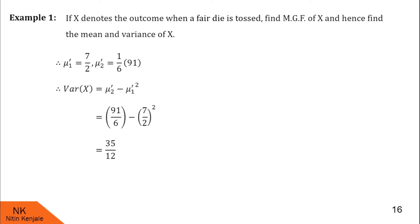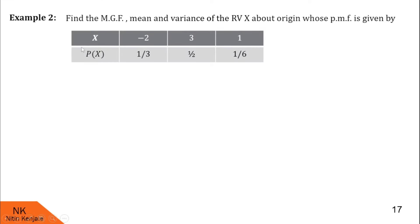I hope you understood how to find mean and variance from the moment generating function. Now let us proceed to the next example. In this example, we are asked to find the MGF, mean, and variance of the random variable x about origin, whose probability mass function is given by the table.